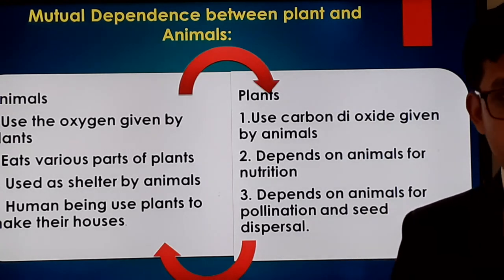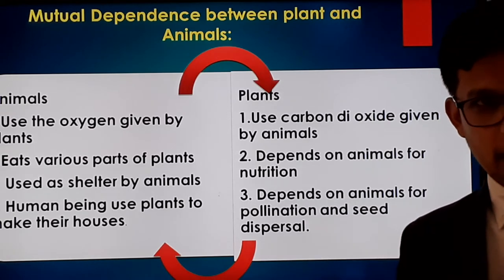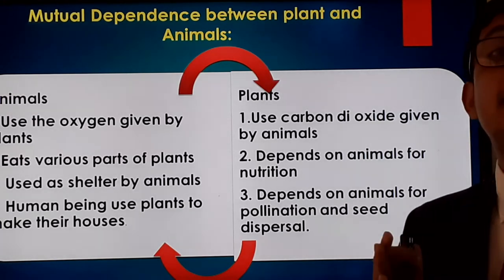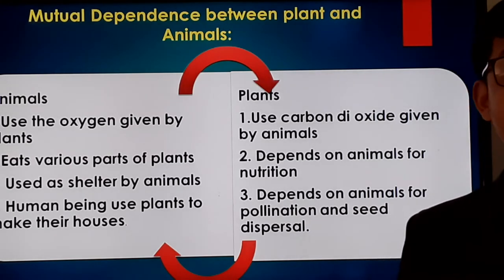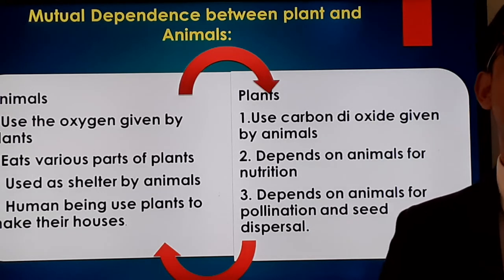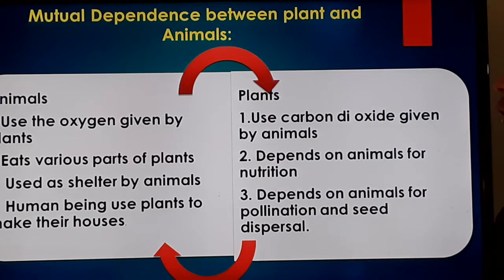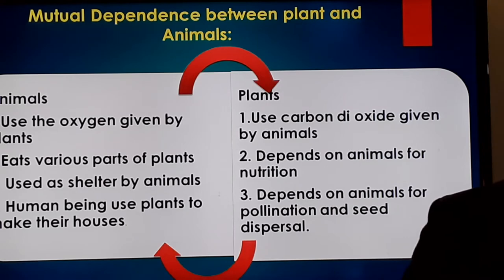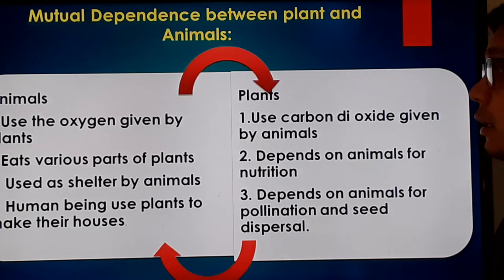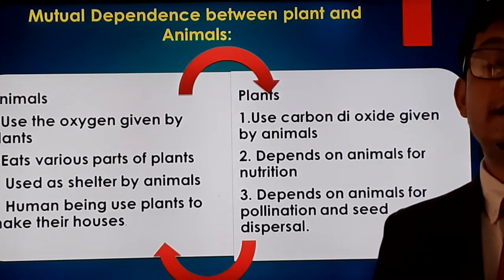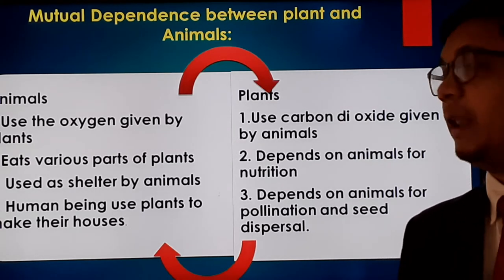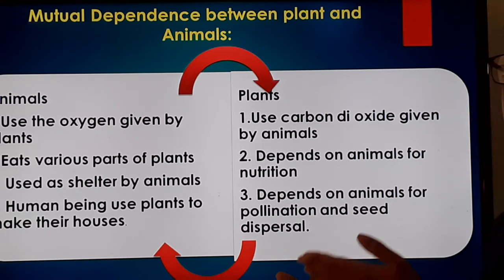Animals use the oxygen given by plants — all animals and human beings surviving on Earth depend on oxygen, which we get from plants. We also eat different parts of plants — leaves, stems, and roots — so we depend on plants for food. Additionally, animals use plants as shelter and as their habitat. Human beings also use plants to make houses and different types of furniture and equipment.